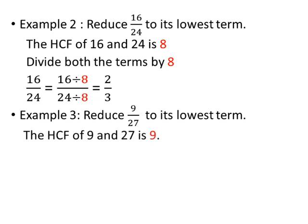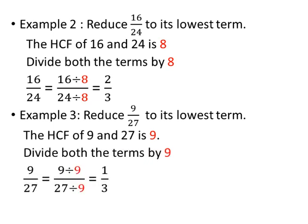The HCF of 9 and 27 is 9. So we divide both the numerator 9 and the denominator 27 by 9. Thus, 9 divided by 9 upon 27 divided by 9 equals 1 upon 3. Since we divided by the highest common factor, the lowest term of 9 by 27 is 1 by 3.